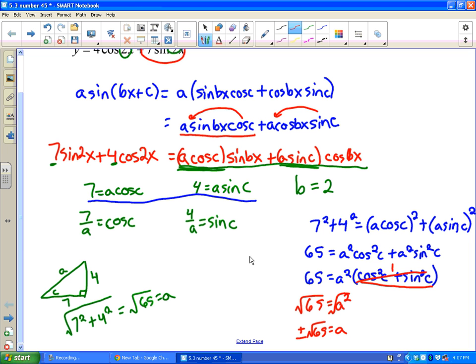So now, if we know what a is and we know what b is, all we have left to find is c. So let's go back to one of these formulas up here, either the one with the 7 or the one with the 4. It doesn't really matter which one because either one will give me c. So let's pick the first one. Let's say that 7 equals - and remember I'm just going to use the positive on this - the positive square root of 65 for a, cosine c.